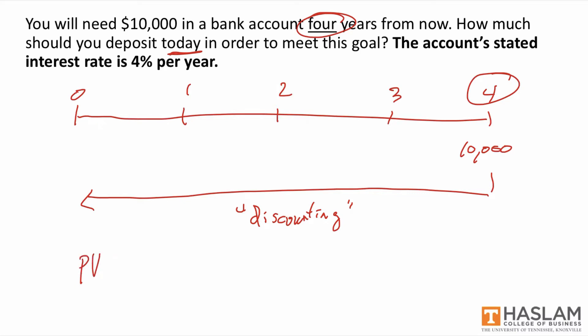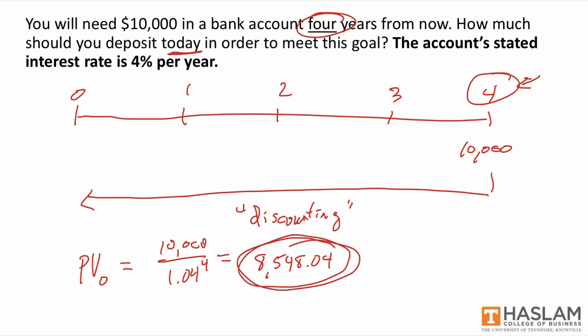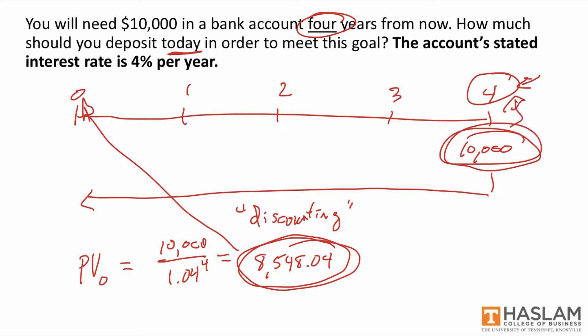The formula for solving this problem is: present value equals the future cash flow divided by one plus the discount rate raised to the fourth power, since it is a year four cash flow. The answer to this problem is $8,548.04. The interpretation is that we are indifferent between $8,548.04 at time zero and $10,000 at time four.